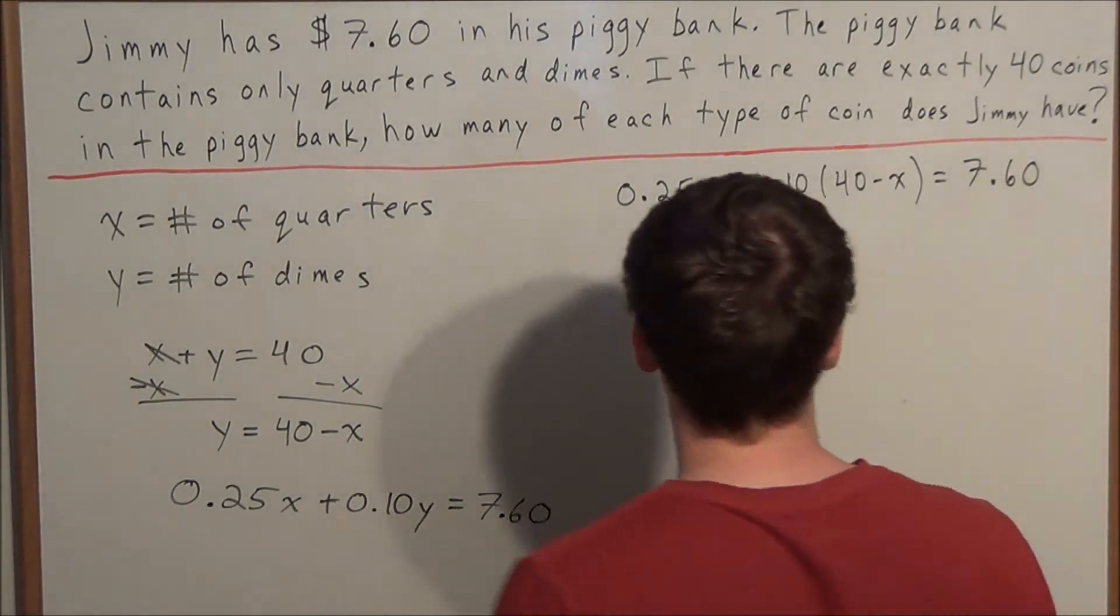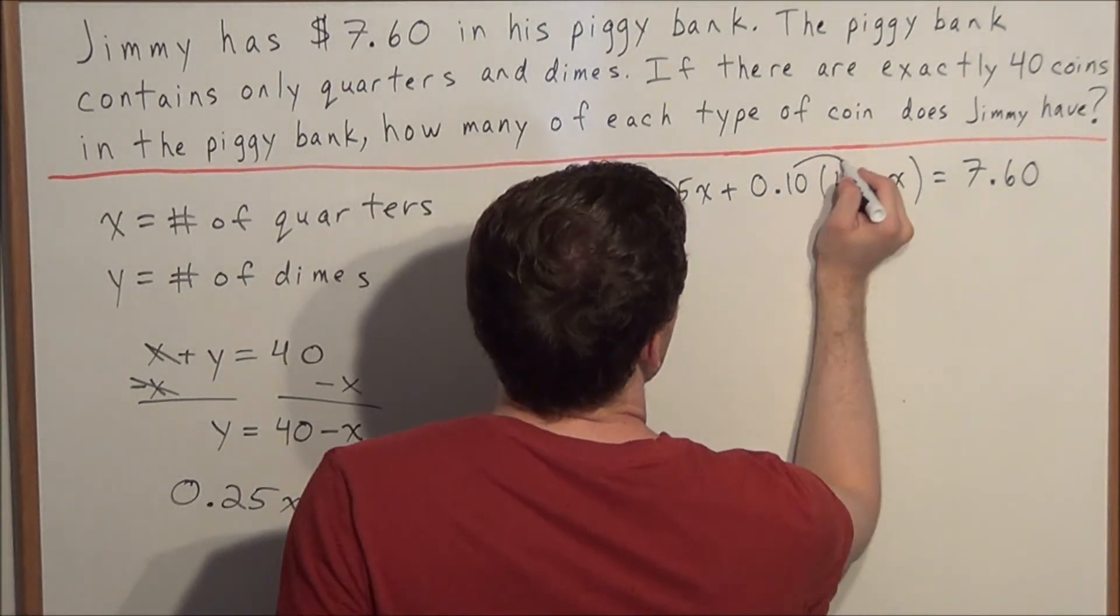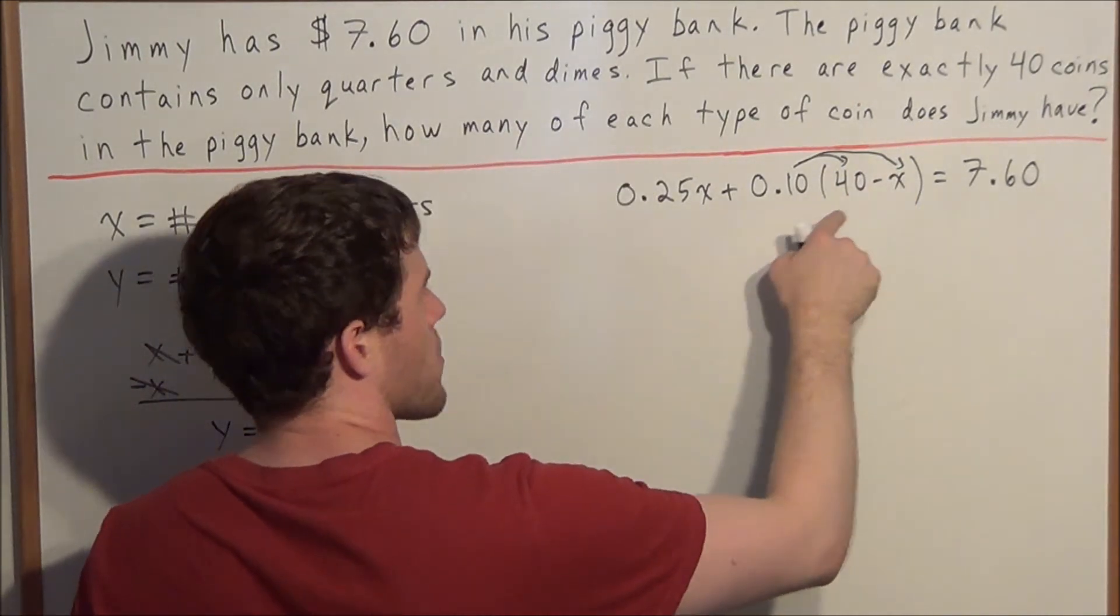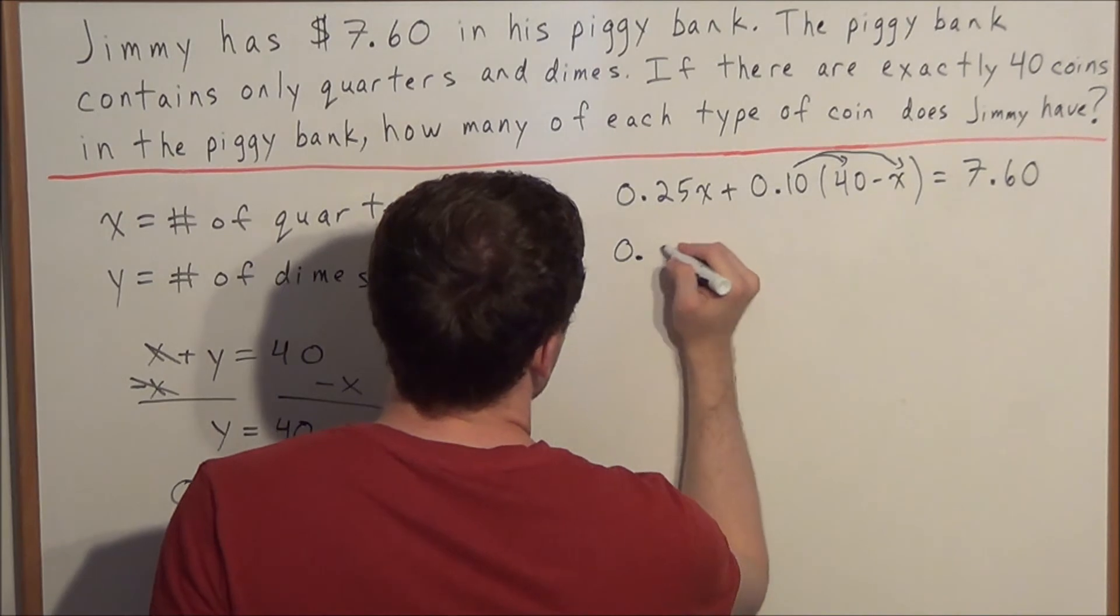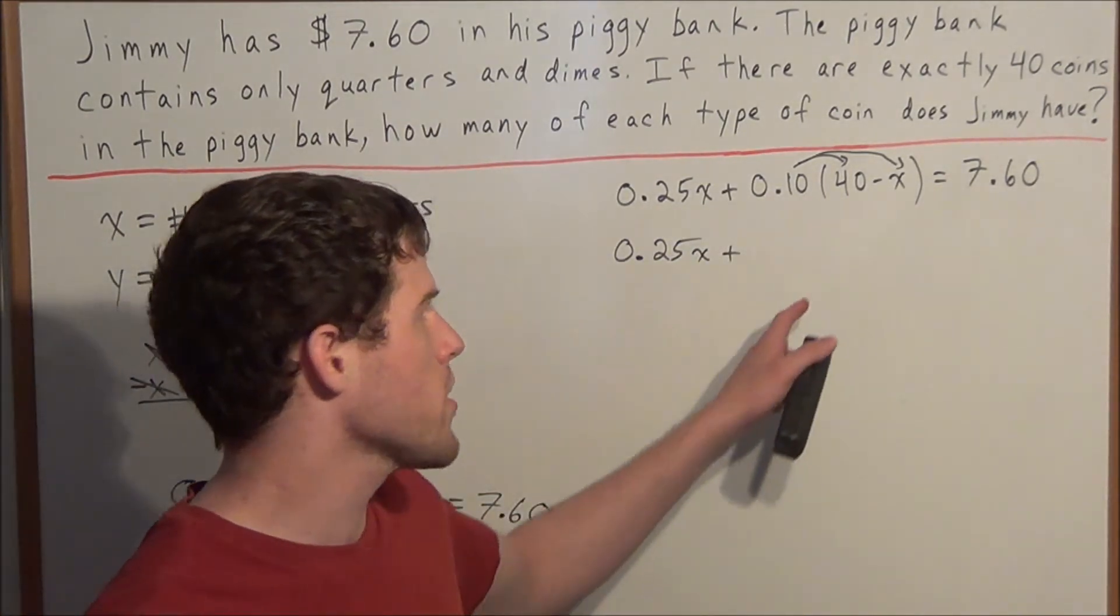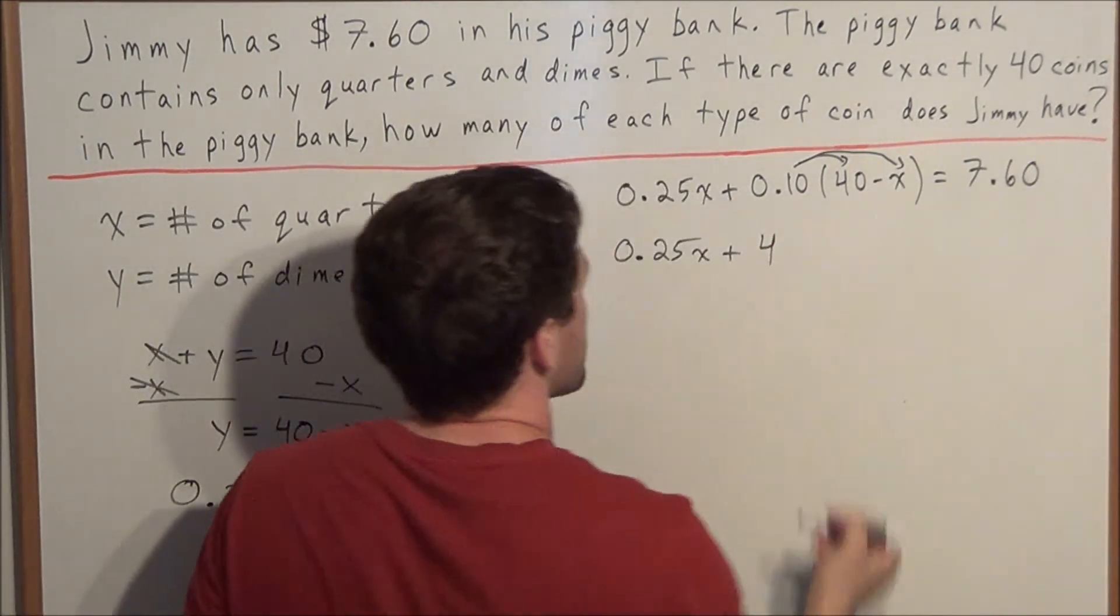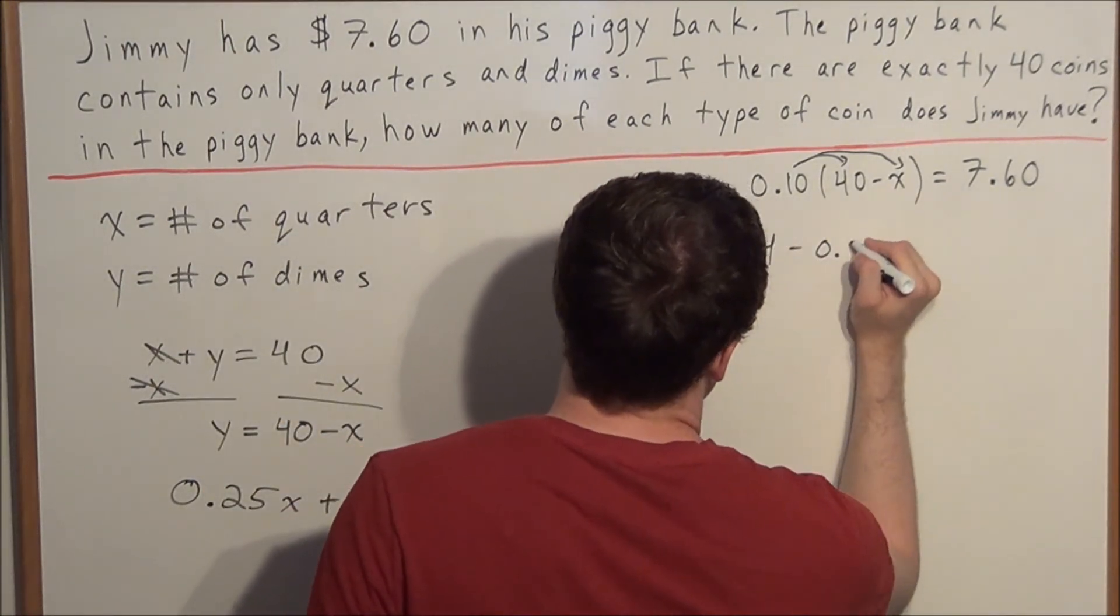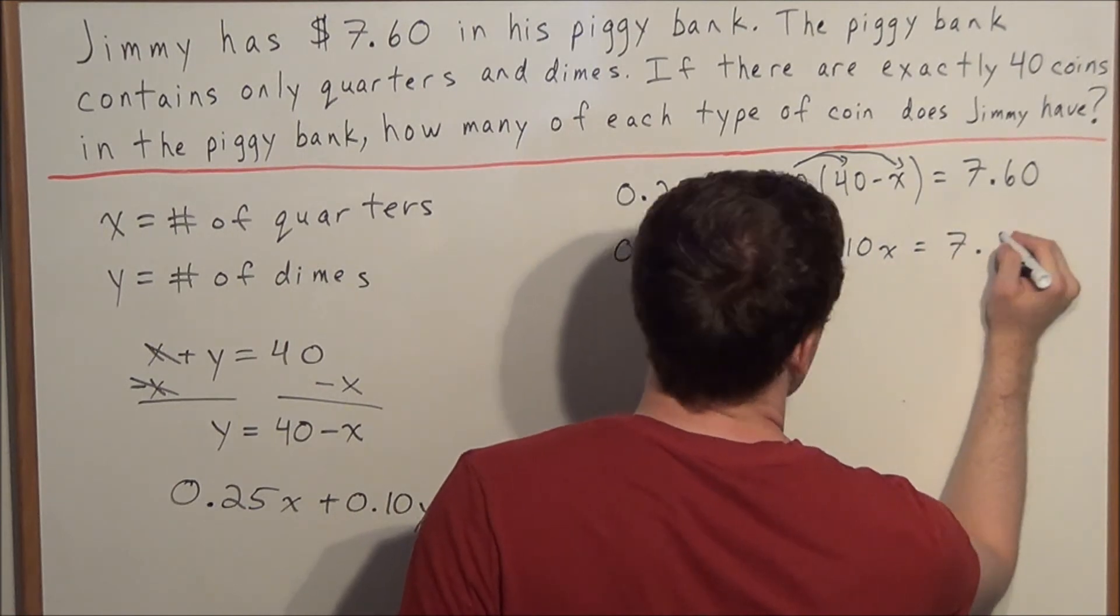So now what we could do is go ahead and distribute. We're going to distribute 0.10, and we're going to multiply 0.10 with these two terms. So the next line reads we have 0.25x plus, so now we have 0.10 times 40, that's equal to 4, and then we have 0.10 times minus x. That's minus 0.10x, and this is still all equal to 7.60.